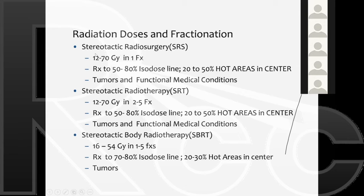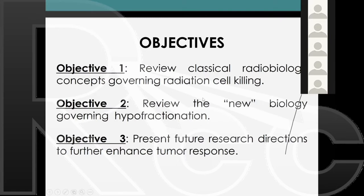Whether it's single dose stereotactic radiosurgery, multiple doses of two to five fractions, or SBRT body radiation, all these doses are above 10 gray, and it seems that above 10 gray some strange things happen. The objectives of this lecture are: one, review classical radiobiology; two, review the new biology to understand what happens at higher doses; and three, present future directions.